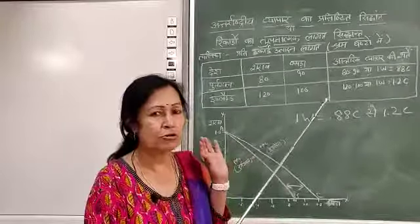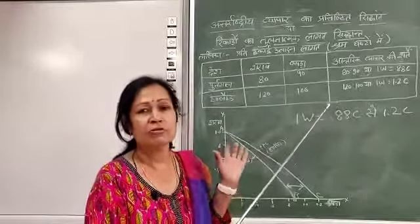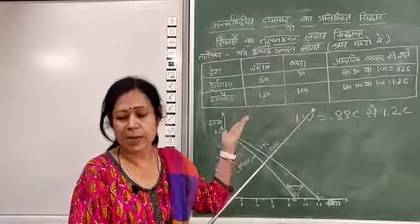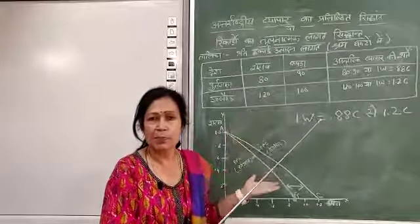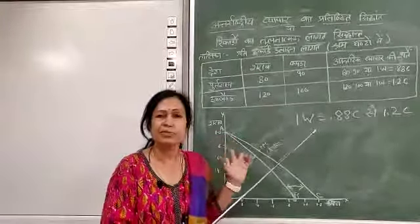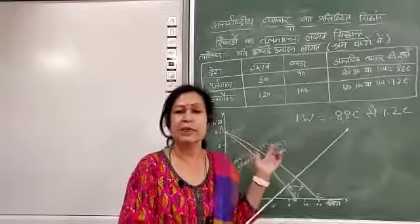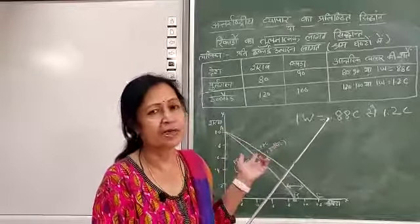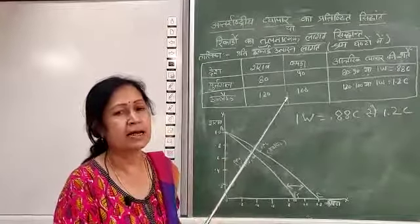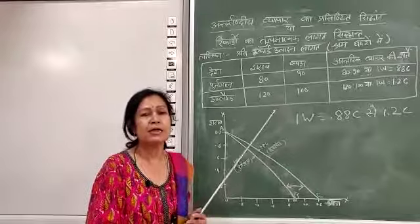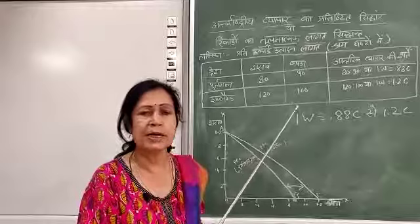इसी तरह अन्तर्राष्ट्रीय व्यापार के लिए कुछ सुधार किए जा सकते हैं जैसे — श्रम लागत के स्थान पर हमें आर्द्रिक लागत को शामिल करें, पूर्ति पक्ष के साथ साथ माँग पक्ष को भी शामिल करें, और सम लागत नियम के अन्दर सिद्धान्त की व्याख्या न करके उत्पत्ति ह्रास नियम और उत्पत्ति वृद्धि नियम का भी ध्यान रखा जाए। इन सुधारों के उपरान्त यह सिद्धान्त इस तरह का महत्त्वपूर्ण सिद्धान्त बन गया है जो आर्थिक शास्त्र के अन्दर सार्वव्यापी एवं सार्वभौमिक है। धन्यवाद।